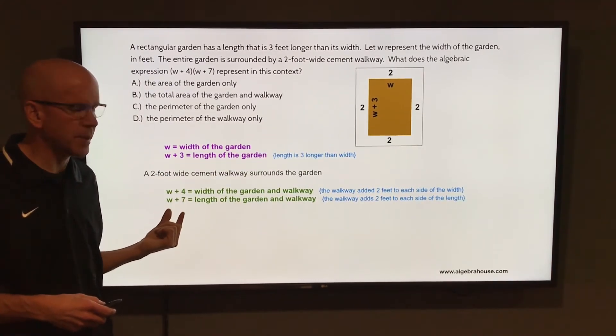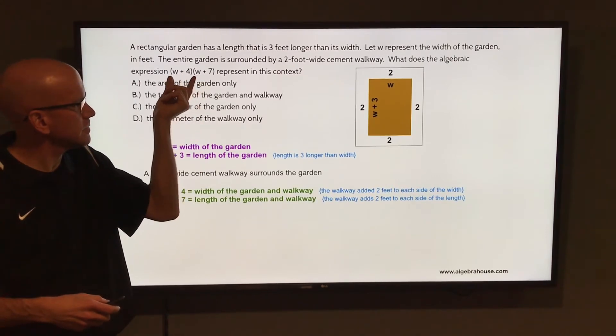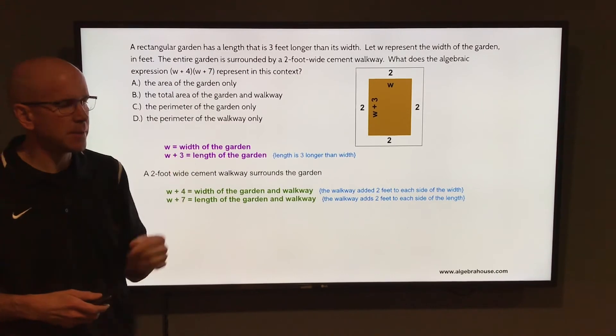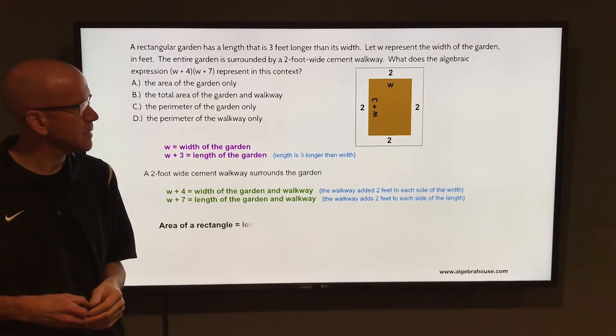So there are the W plus four and W plus seven that are talked about in this problem. The question is what is W plus four times W plus seven represent in this context?